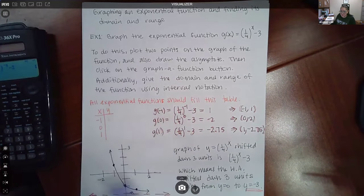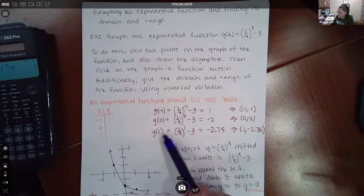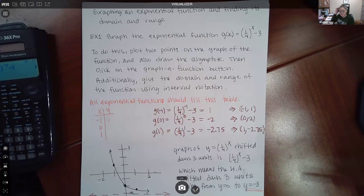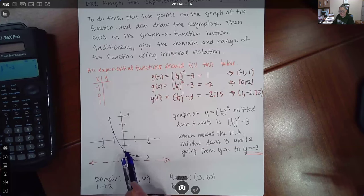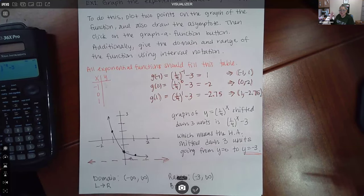Similarly I did the same computation for plugging in zero and plugging in one, and I ended up with these y values. Those are the three points that I plotted on the graph. You see those three points being plotted here. You would plot them inside of Alex.